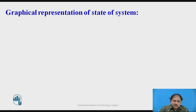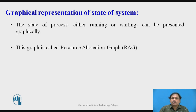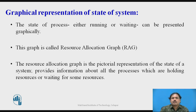Now we are going to use a different way of presenting the states of a process — a graphical presentation to define the different states. A process can be in either a running state or a waiting state. We introduce a new concept called the Resource Allocation Graph, simply called RAG. This RAG is a pictorial presentation of all the process states in a given system.